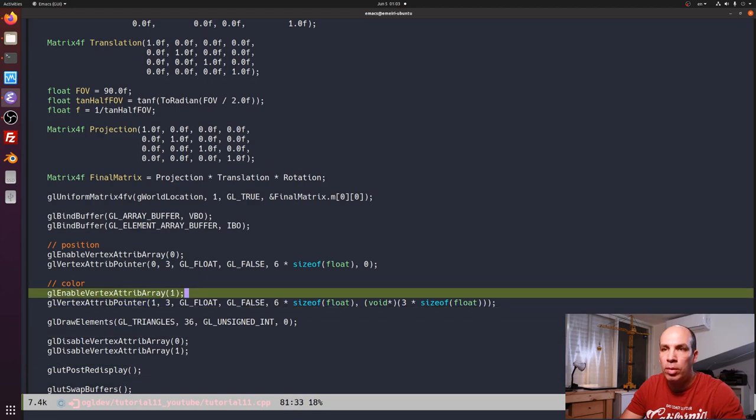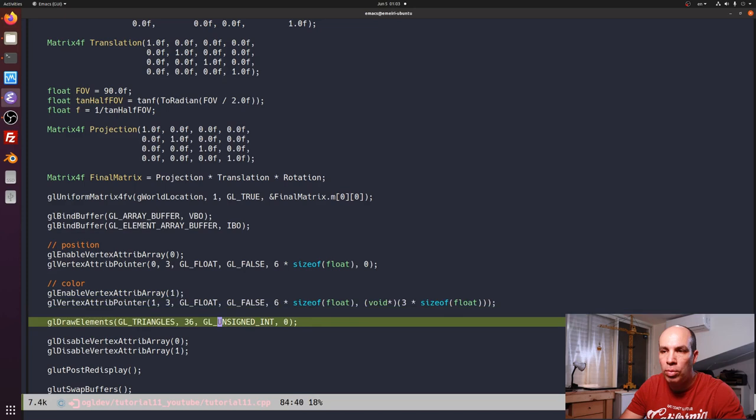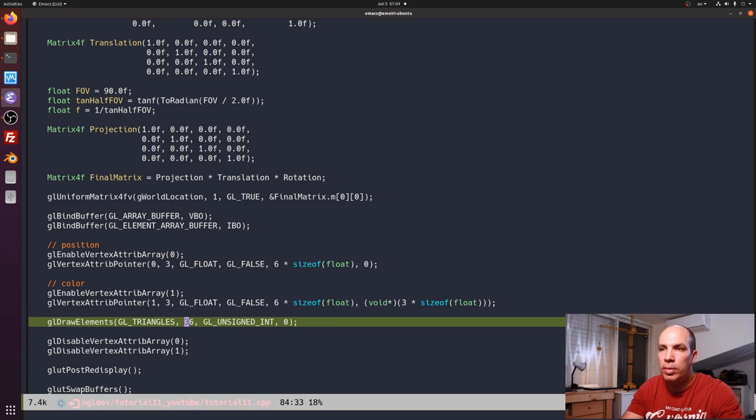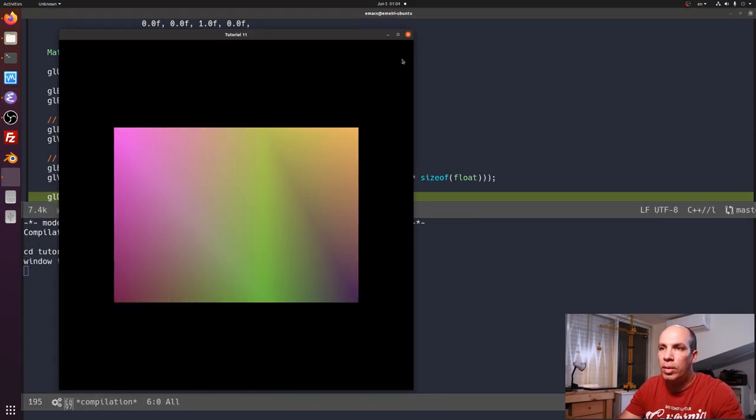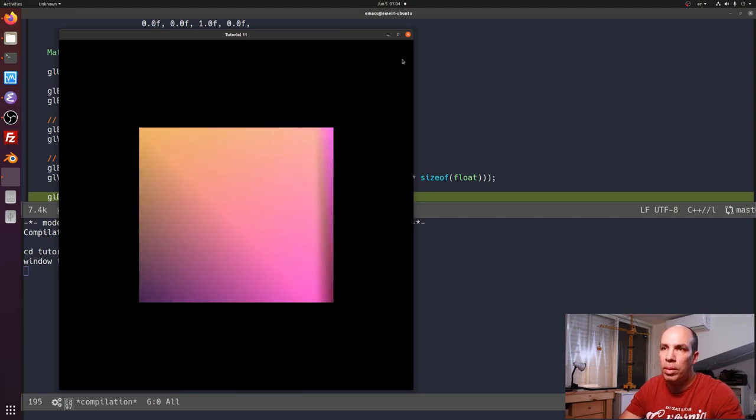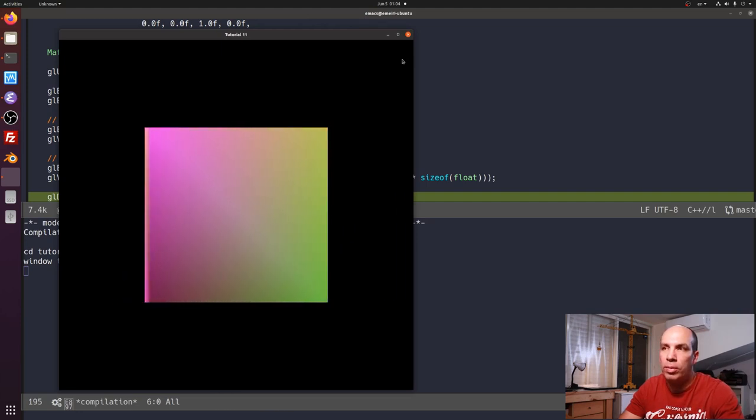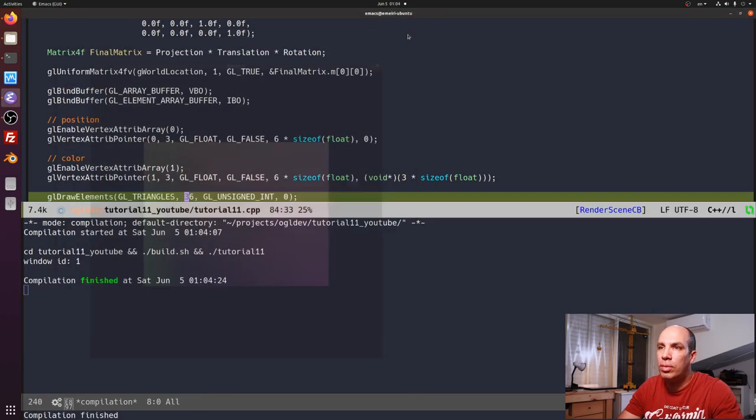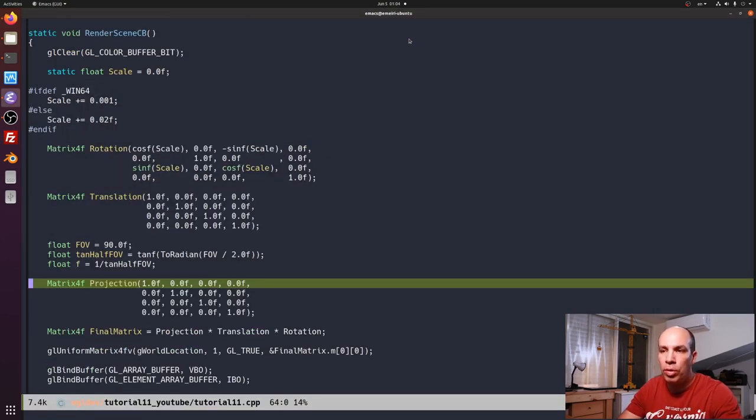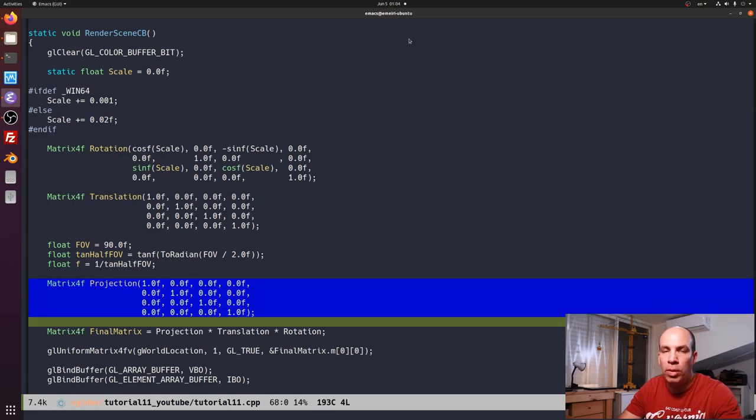And here we send the final matrix into the shader as a uniform and the rest is the same as the previous tutorial. The only change that you need to make sure is to render the correct number of vertices and since we have 12 triangles for the cube we need 36 indices. So now let's run this and we can see that it appears to be a cube but there is no depth and no perspective projection, it just doesn't look right.